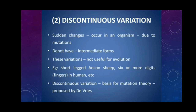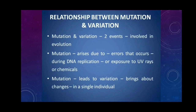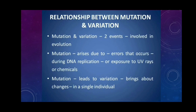Hugo de Vries proposed the mutation theory based on this discontinuous variation concept. Both mutation and variation are involved in evolution. Evolution means gradual development of complex species from simpler forms. Mutation is a sudden heritable change that arises due to errors in DNA — that is, the gene — or due to exposure to UV rays or chemicals. This mutation leads to variation, and variation brings about changes in a single individual.